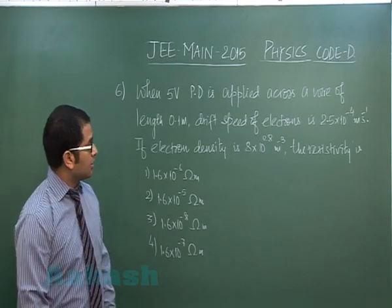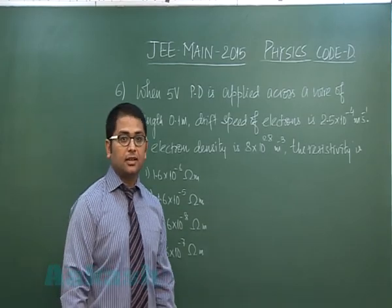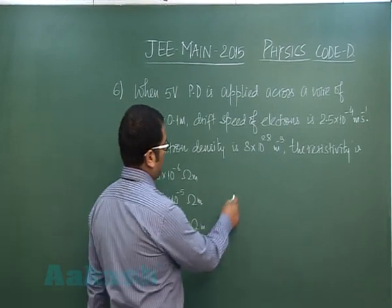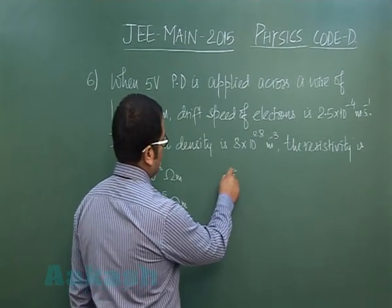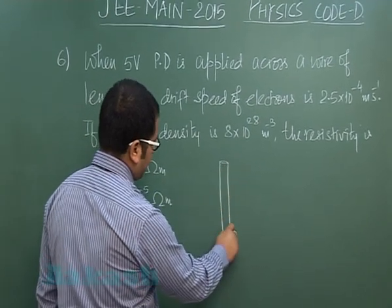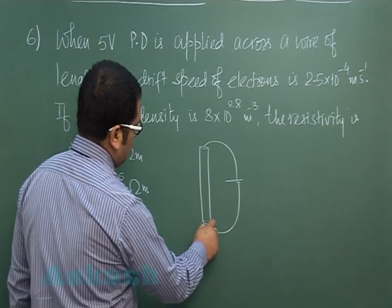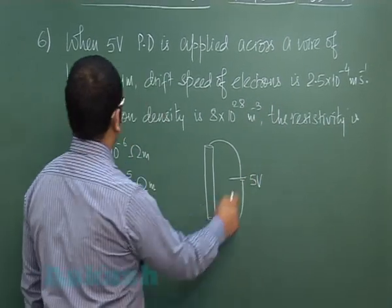Question number six is related to current electricity and it goes as follows. When five volt PD is applied across a wire, so this is our specimen wire and five volt PD is applied across this.